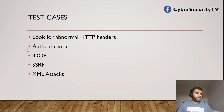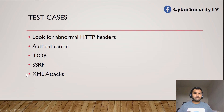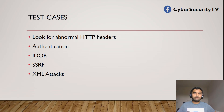Next we have XML attacks. If the API is supposed to use JSON, try changing the Content-Type from application/JSON to XML and see if it responds to the XML request and throws an error. If so, you can try XML entity attacks, which we will cover in detail in the future. That's on the OWASP Top 10 list at A4.